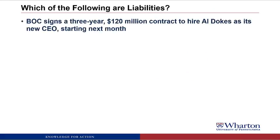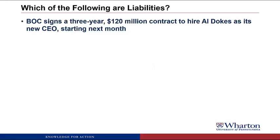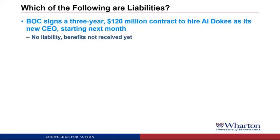BOC signs a three-year, $120 million contract to hire Aldoaks as its new CEO starting next month. This would not be a liability because there's no obligation based on benefits that have been received currently or in the past. Until Aldoaks actually works for us without getting paid, there cannot be a liability. The liability would only be for the time he's worked without pay — we don't book a liability for the entire three-year contract because it's too uncertain. He could quit tomorrow, we could fire him, or lawyers could find ways to get out of this contract.